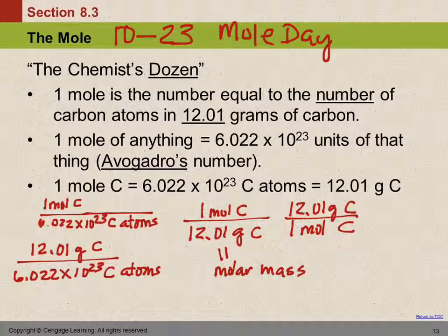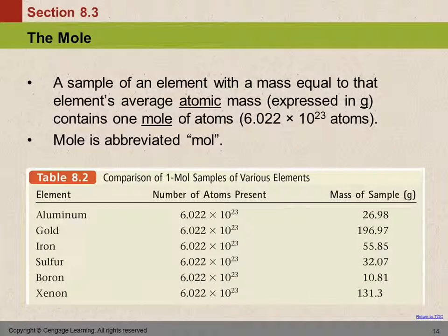So guess what? We're going to do dimensional analysis with these things. A sample of an element with a mass equal to that element's average atomic mass expressed in grams contains one mole of atoms. So if you take the atomic mass from the periodic table and put the unit grams on it, that's the mass of one mole. And it's Avogadro's number of things.